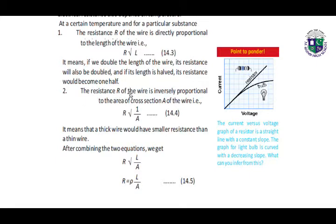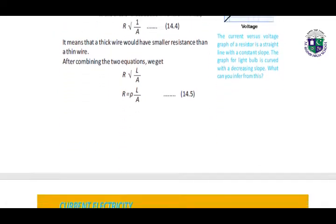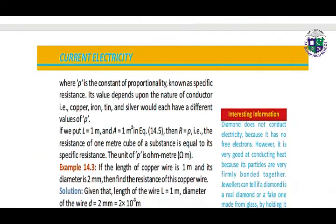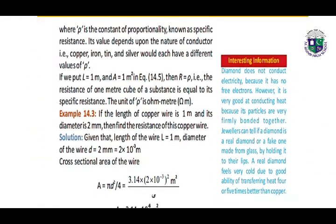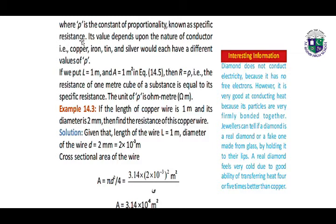The resistance R of the wire is inversely proportional to the cross-sectional area A of the wire. This means that a thick wire would have smaller resistance than a thin wire. After combining equations 14.3 and 14.4, we get equation 14.5, where ρ (rho) is the constant of proportionality known as specific resistance. Its value depends upon the nature of the conductor — copper, iron, tin, silver would each have different values of ρ.